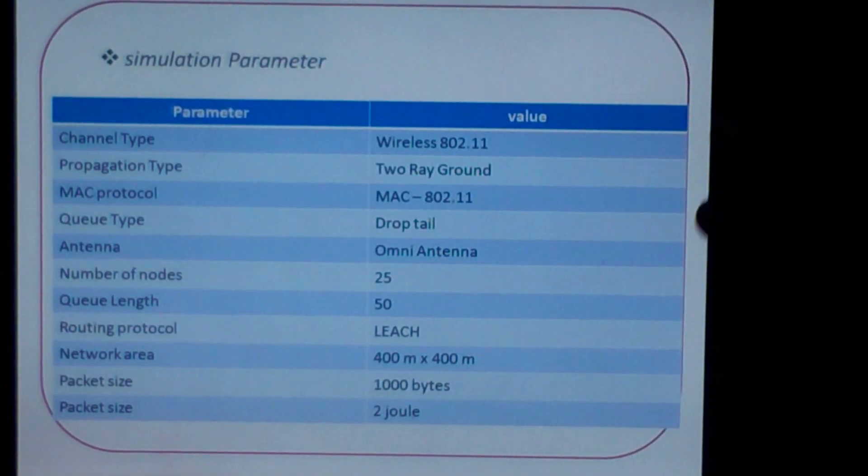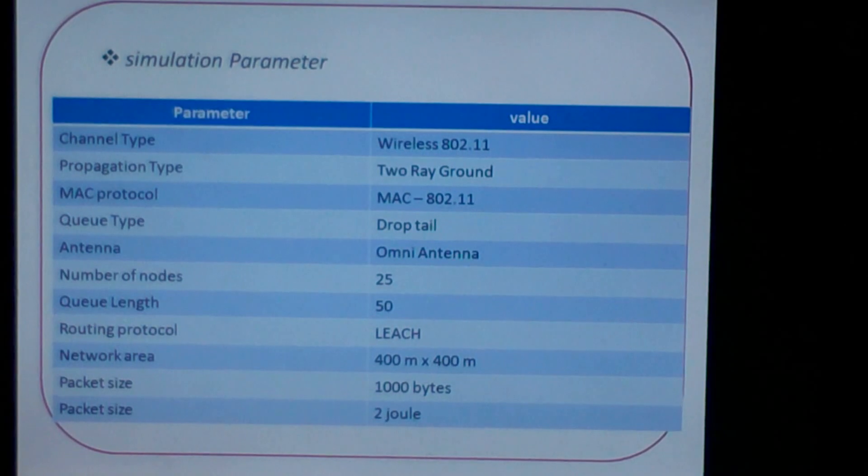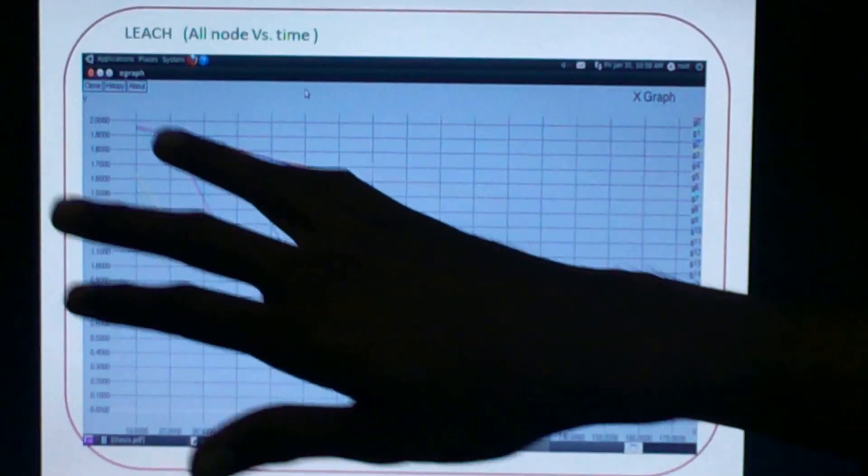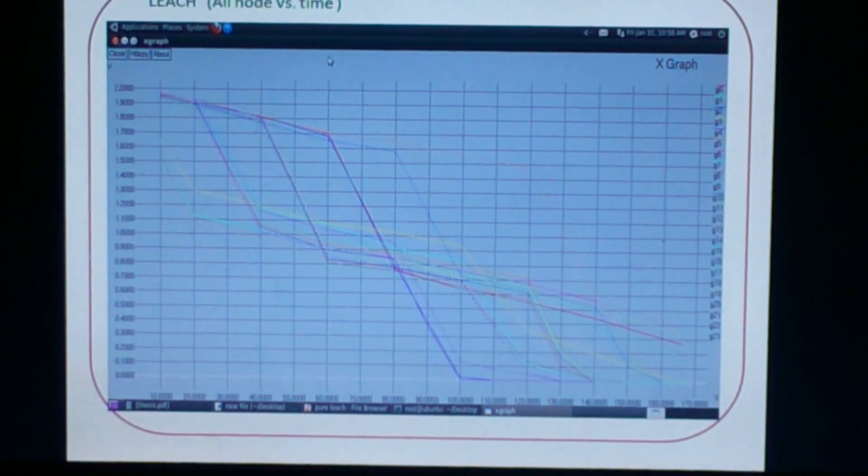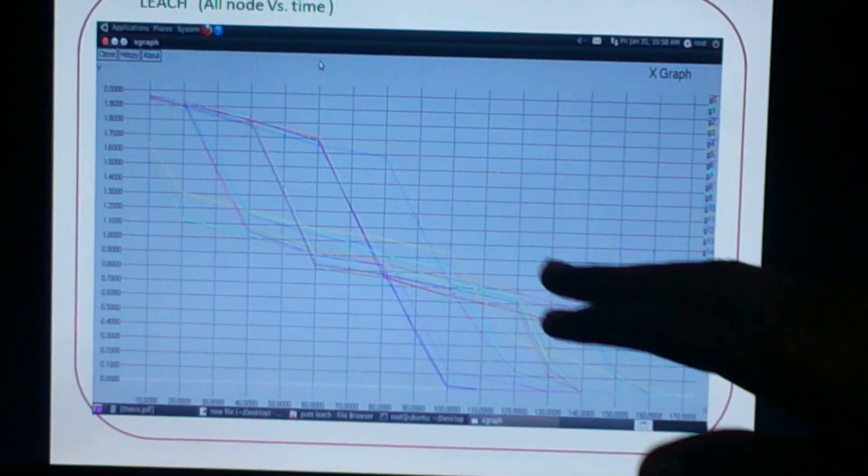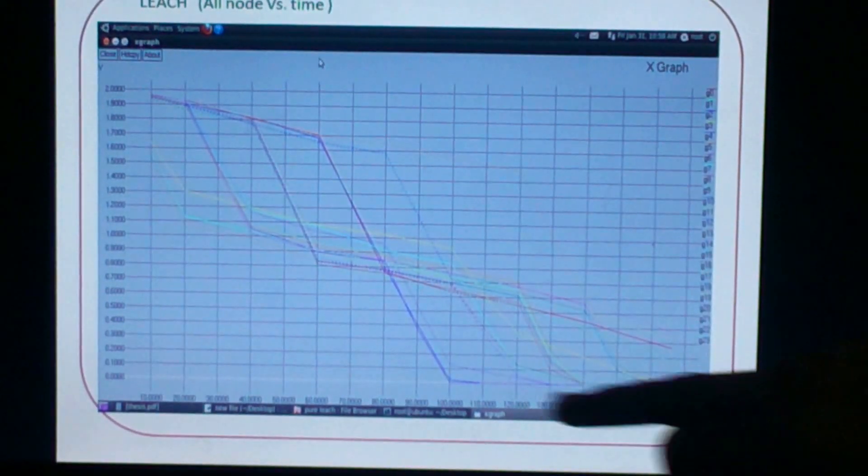These are the simulation parameters that I have considered in NH2. This graph shows all the nodes versus time. I have taken 25 nodes having 2 Joule energies and we can say that the energy decreases with time.